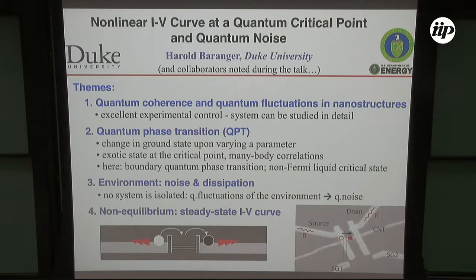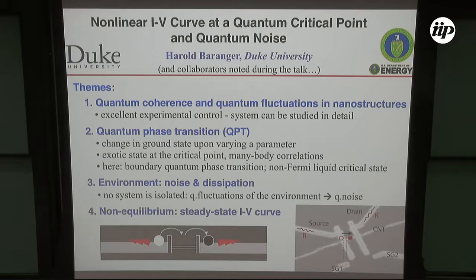One usually thinks about phase transitions in terms of bulk systems, but there's also the possibility of having a phase transition involving boundary degrees of freedom. In classical transitions, this would have to do with the free energy of surface terms, and in my case, we'll be talking about boundary quantum phase transitions and a non-Fermi liquid critical state at the transition. These interesting states are intrinsically connected to the quantum noise, the quantum fluctuations of the environment. Finally, towards the end of the talk, we'll be talking about non-equilibrium phenomena — specifically non-equilibrium steady states or the current-voltage curve.